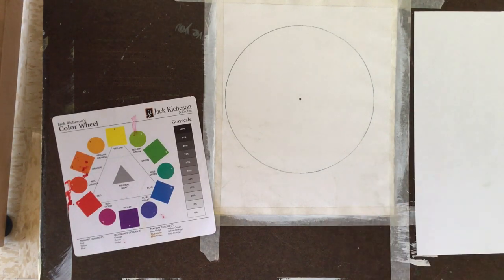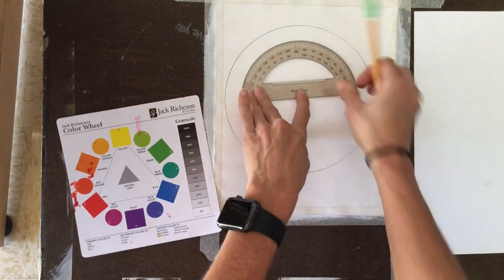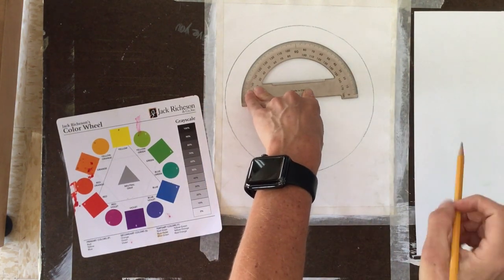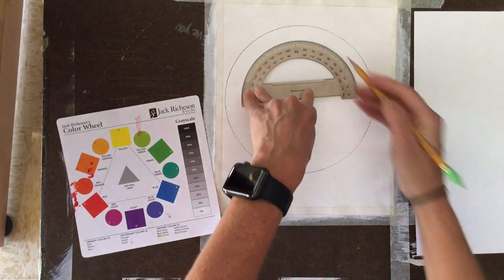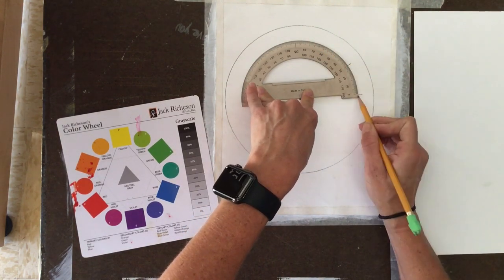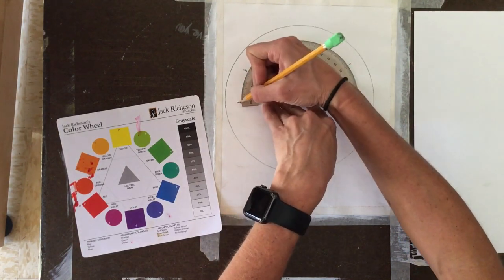Once we have this circle, we are going to break it into 12 sections. There are 12 different colors on the color wheel, that is why we're breaking it into 12 sections. Each piece should be a 30-degree measurement. This is what I'm measuring using the protractor.